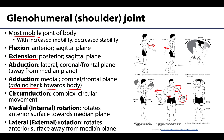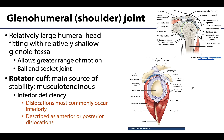Lastly, the glenohumeral joint is capable of both medial and lateral rotation. Medial rotation, sometimes referred to as internal rotation, rotates the anterior surface of the humerus towards the median plane. These actions take a little time to get used to, but you will begin to feel more comfortable as we work through the musculoskeletal content with those terms.